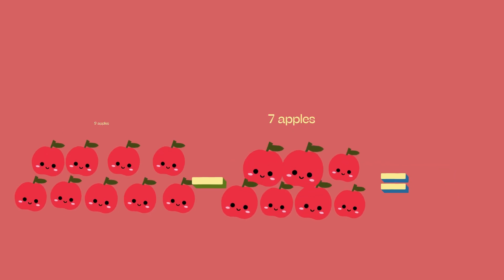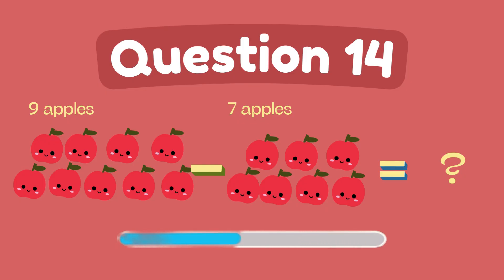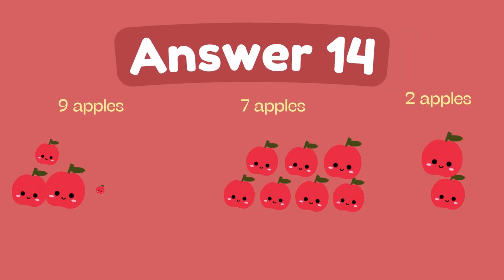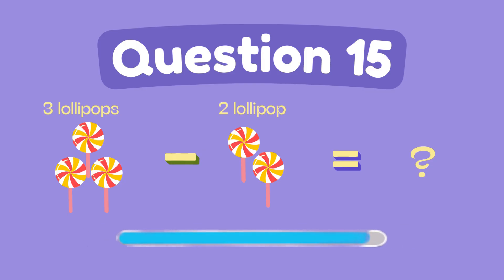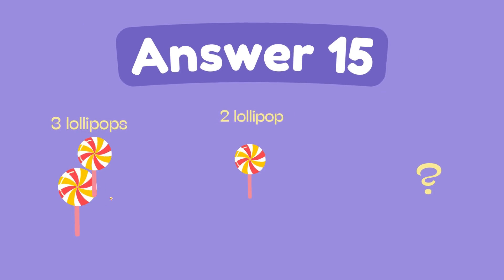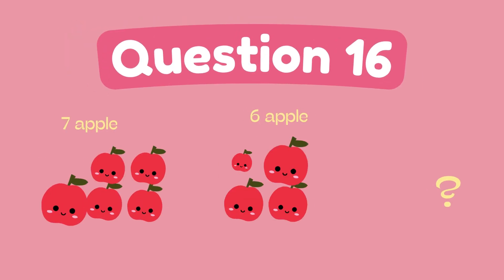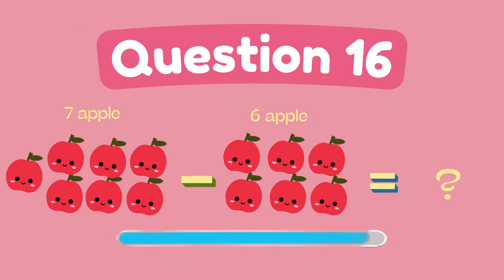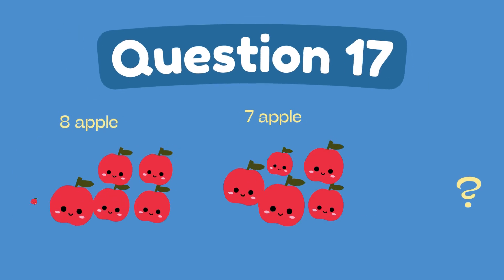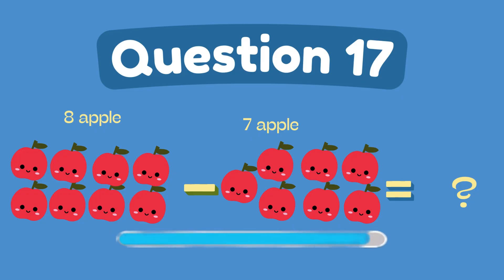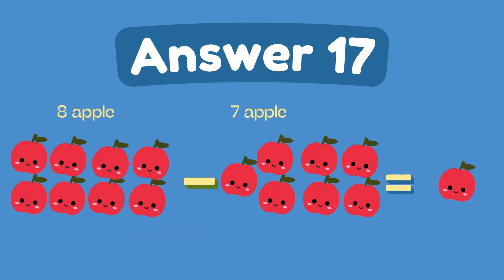What is 9 minus 7? The answer is 2. What is 3 minus 2? The answer is 1. What is 7 minus 6? The answer is 1. What is 8 minus 7? The answer is 1.